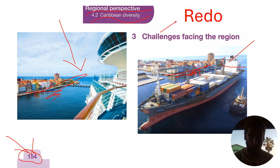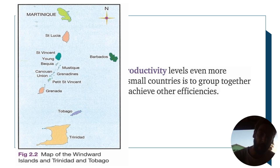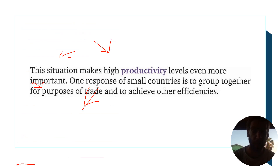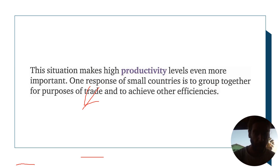The Caribbean region, like Curaçao, is facing a lot of challenges. We talked before about the fact that the Caribbean consists of a lot of small islands like Barbados, St. Vincent, Grenada, or Tobago — those are in the Windward Islands. These are examples of the small islands, and this makes high production important.